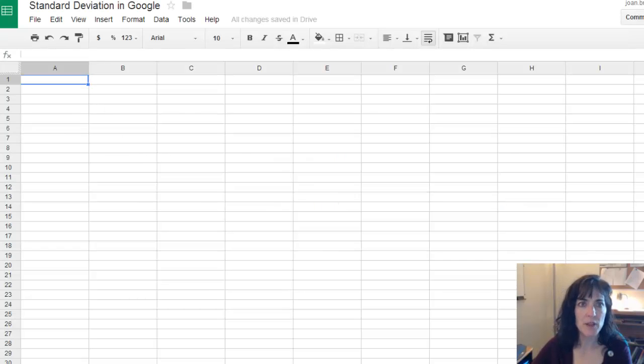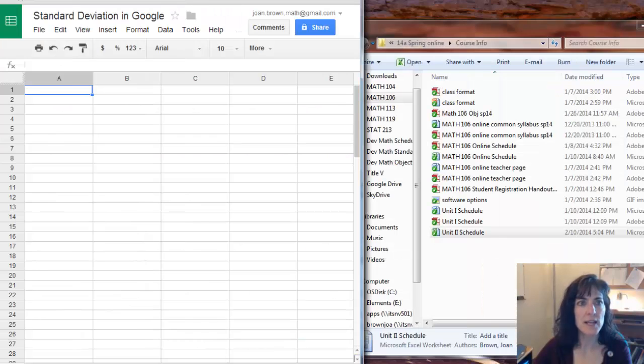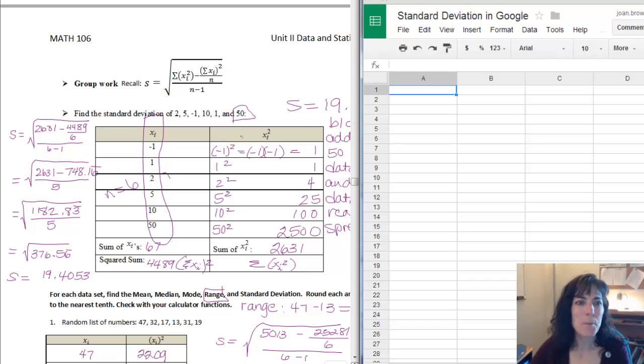Now I need to try to mimic this table. So I'll just slide this over a little bit so we can see both things at once. I want to leave a column just for titles. So I'm going to start over on column B. And then I'll call that my x's. Or you could put x sub i's if you want to be fancy. And then my x squared. So I'm going to use the caret to say squared. So caret two means squared. Now I'm just going to type in my information. So I have negative one, positive one, two, five, ten, and fifty. So there's my data.